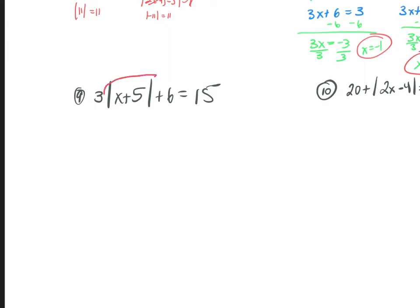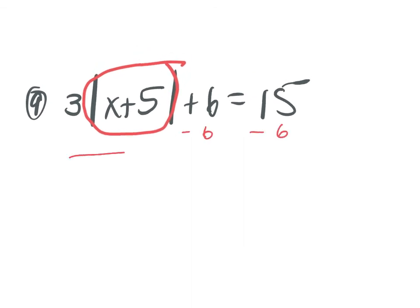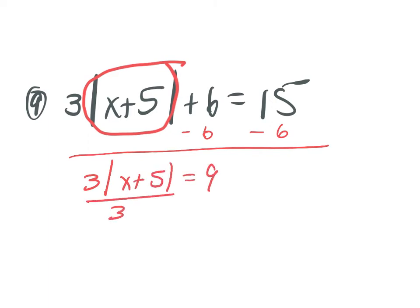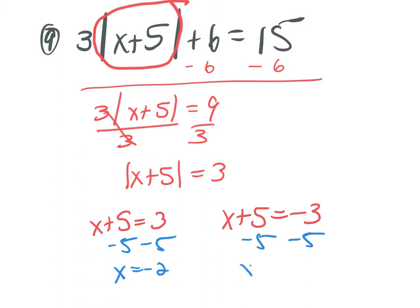If I want to isolate this absolute value, there are two things I need to do. First subtract the 6: 15 minus 6 is 9, so we have 3 times the absolute value. Then divide by 3: absolute value of x plus 5 equals 3. Once isolated, I write two equations: x plus 5 equals positive 3 and x plus 5 equals negative 3. Subtract 5: x equals negative 2. Subtract 5: x equals negative 8.